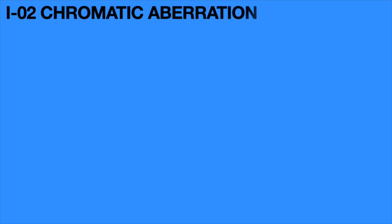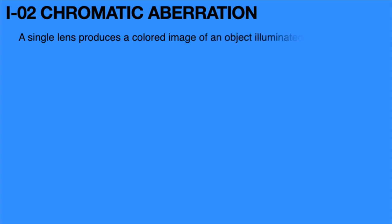Similarly, chromatic aberration occurs not only in the prism but also in lenses. A single lens produces a colored image of an object that is illuminated by white light. This is called chromatic aberration.